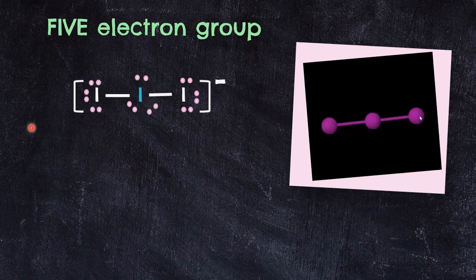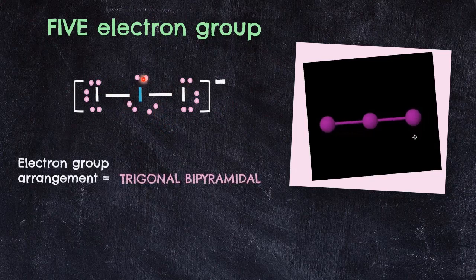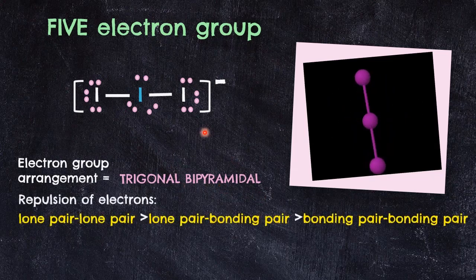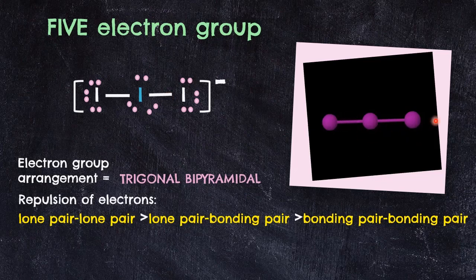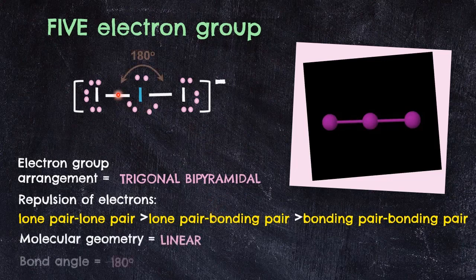I3⁻ has one iodine as the central atom surrounded by 2 bonding pair electrons and 3 lone pair electrons, giving a trigonal bipyramidal electron group arrangement. Due to repulsion between lone pair electrons from both upper and lower sides, the terminal atoms align in a straight line to minimize repulsion, resulting in a linear geometry with a 180° bond angle.